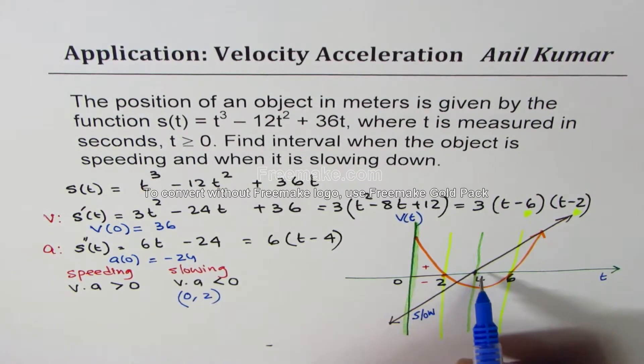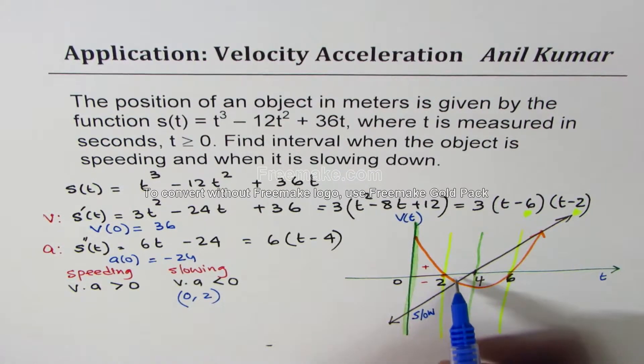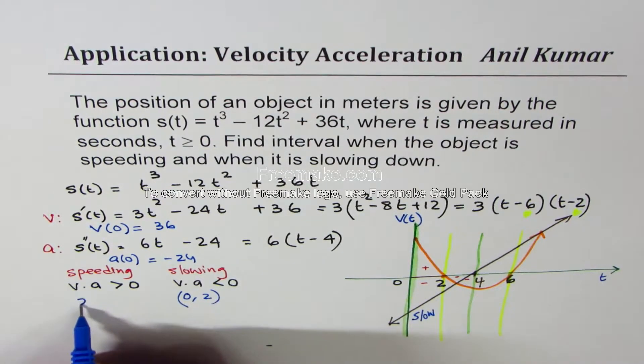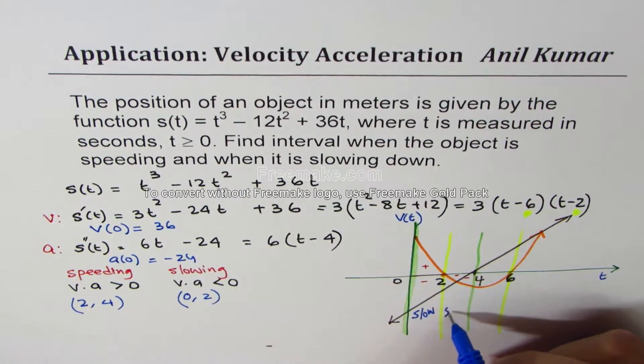Now, interval 2 to 4. In 2 to 4, both are negative. Negative velocity and negative acceleration, which makes them same sign. So 2 to 4, they are speeding. So this interval is for speed.